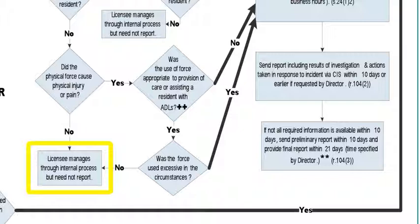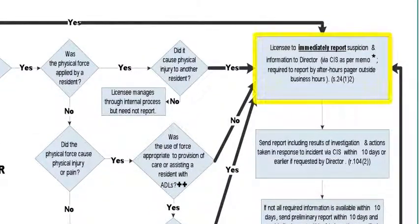Obviously there's somebody's perception that there was force, so let's look at that situation even though maybe it wasn't. But if the answer to either of these - was the use of force appropriate to provision of care assisting a resident with ADLs? For a person who's totally independent, taking themselves to the washroom, and something happens with the staff - then that was not needed with that task and would immediately need to be reported, by the after-hours pager if necessary.